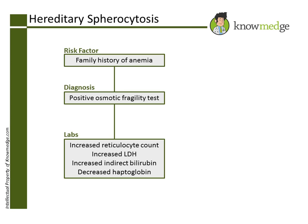Choice E, iron deficiency, is incorrect as the patient does not give a history of any bleeding. Remember that bleeding excessively will cause an increased reticulocyte count, but iron deficiency anemia is one of the causes of a low reticulocyte count.